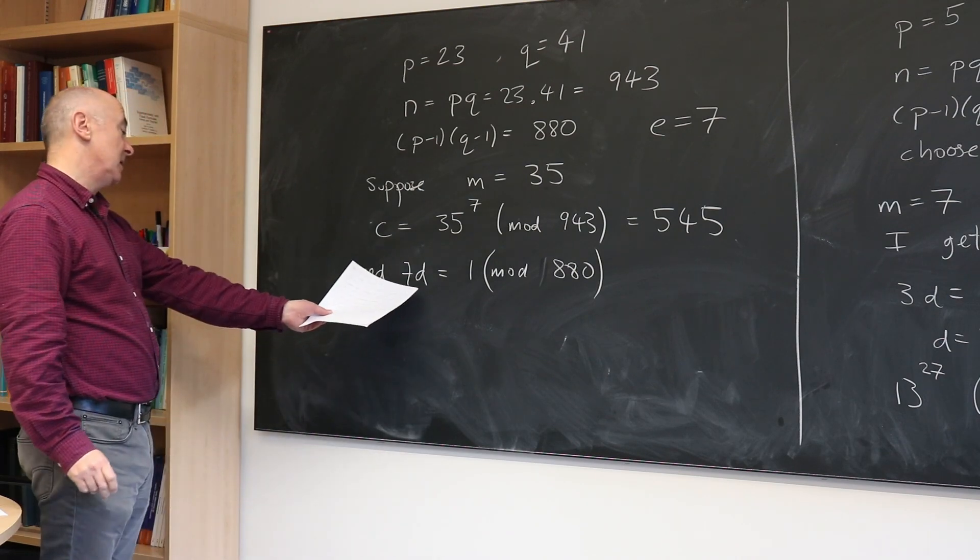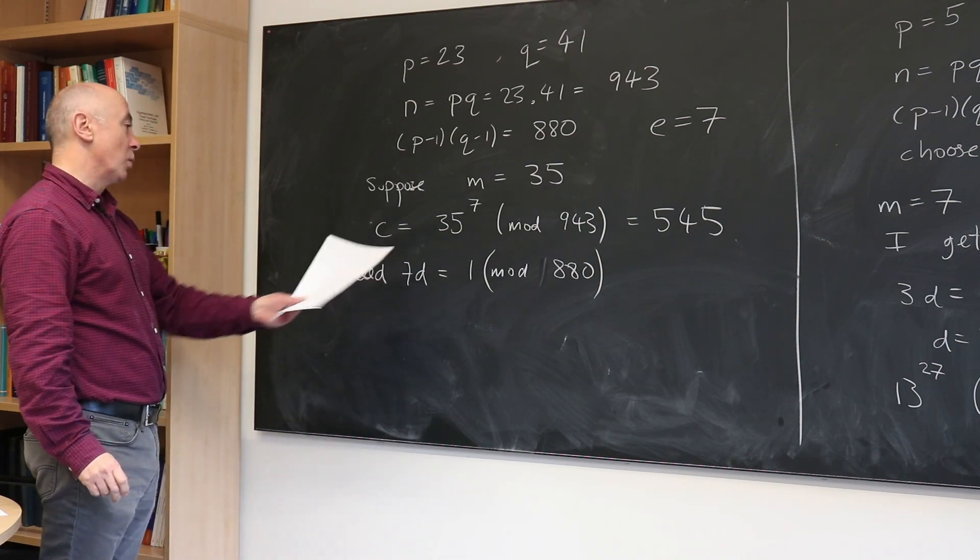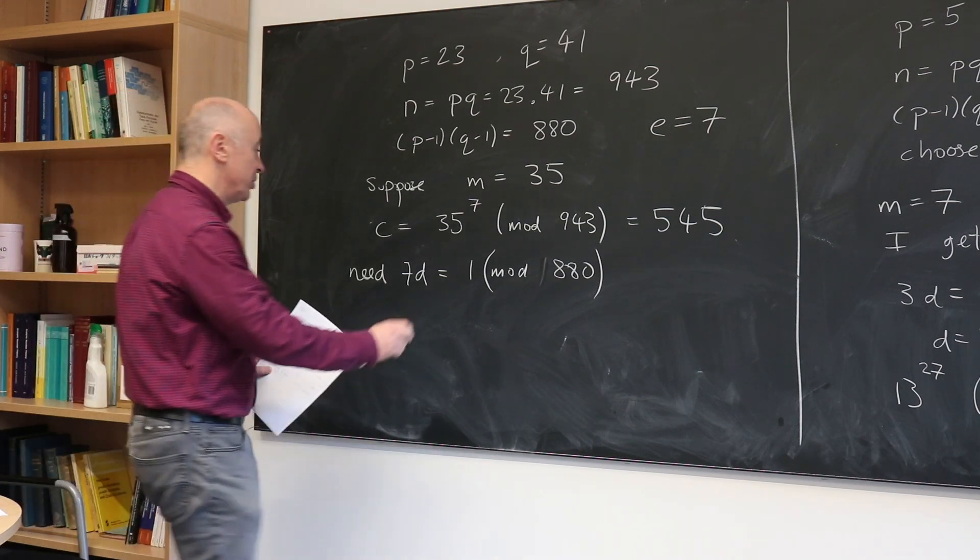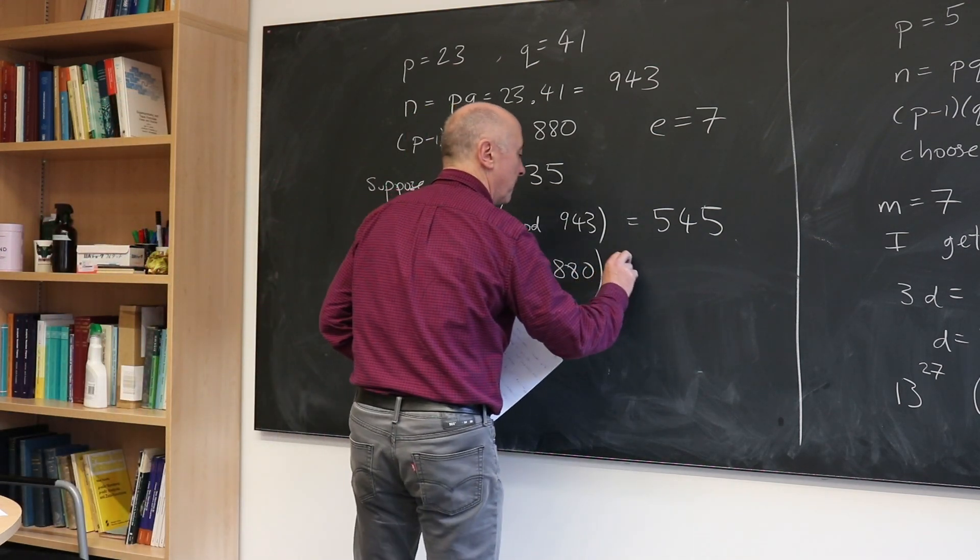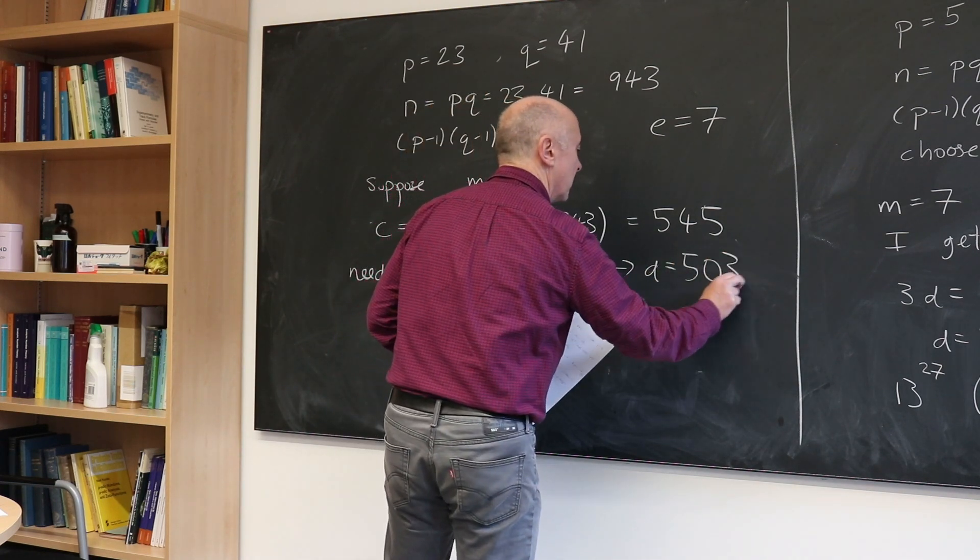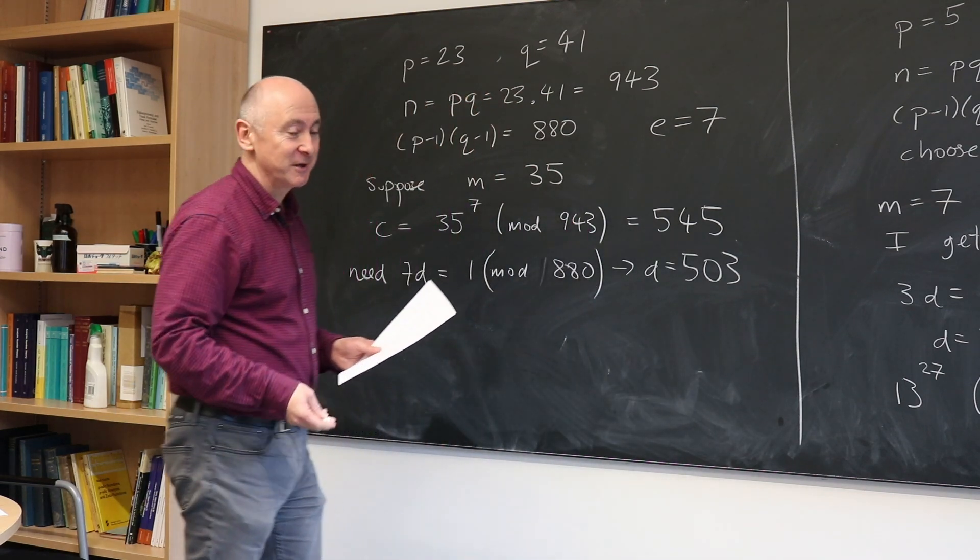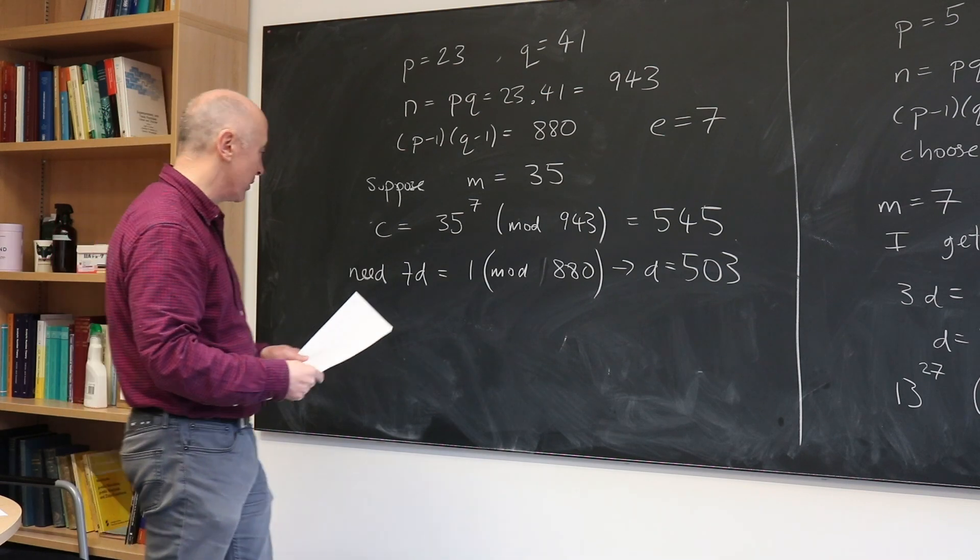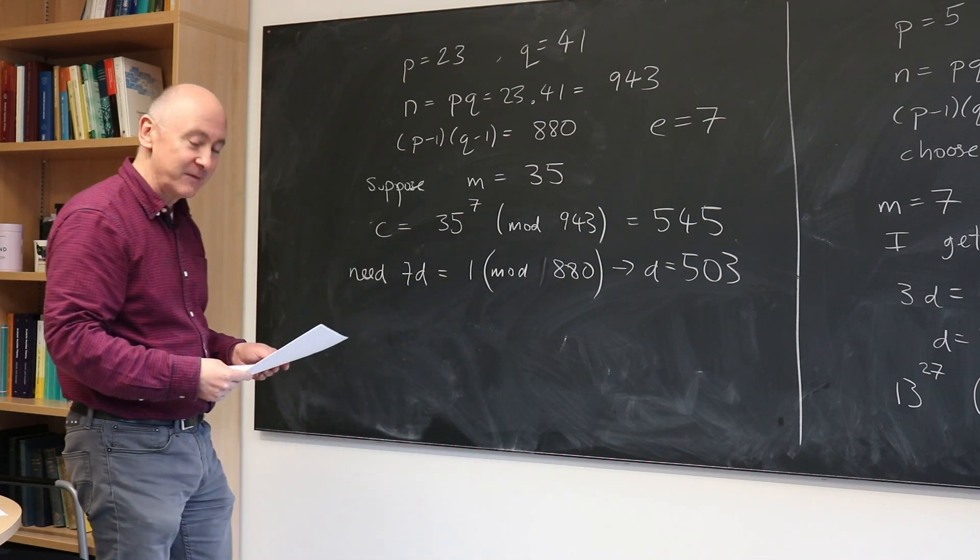So we need to find D such that 7 times D is 1 modulo 880. And one solution to that is D is 503. Again, that's a challenge that you may wish to. You can check this very easily, but the question is how you would find that D. I'll leave that as an exercise.